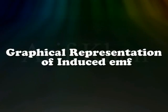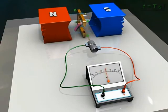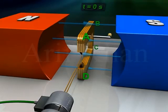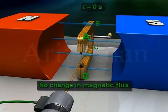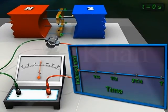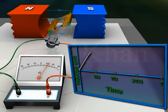Graphical representation of induced EMF: suppose the armature takes T seconds to complete one rotation clockwise. At time t = 0, the armature ABCD is vertical with arm AB up and arm CD down. At this position, when the armature rotates, the rate of change of magnetic flux is momentarily zero, hence the induced EMF at this position is 0.